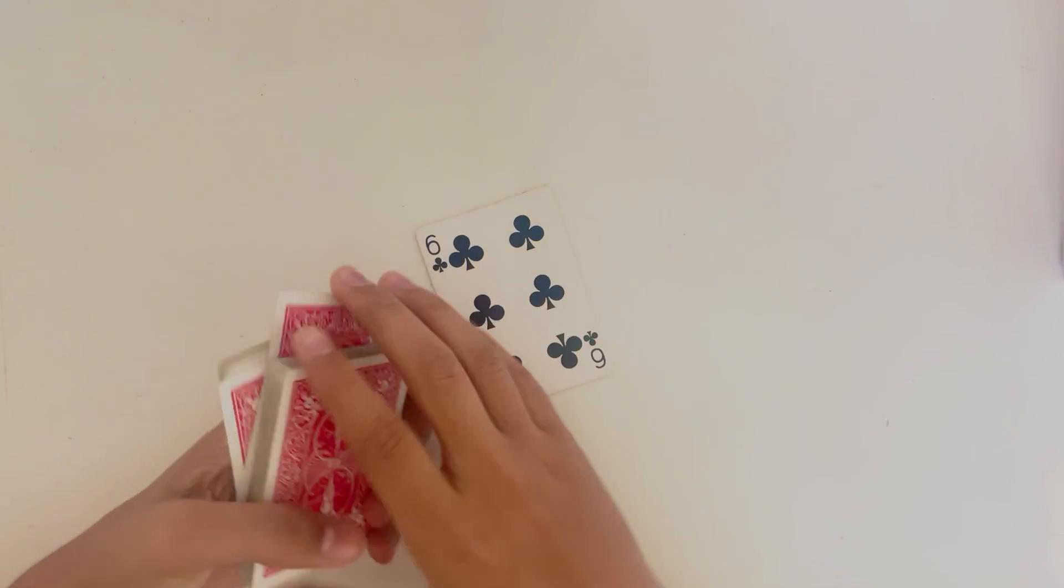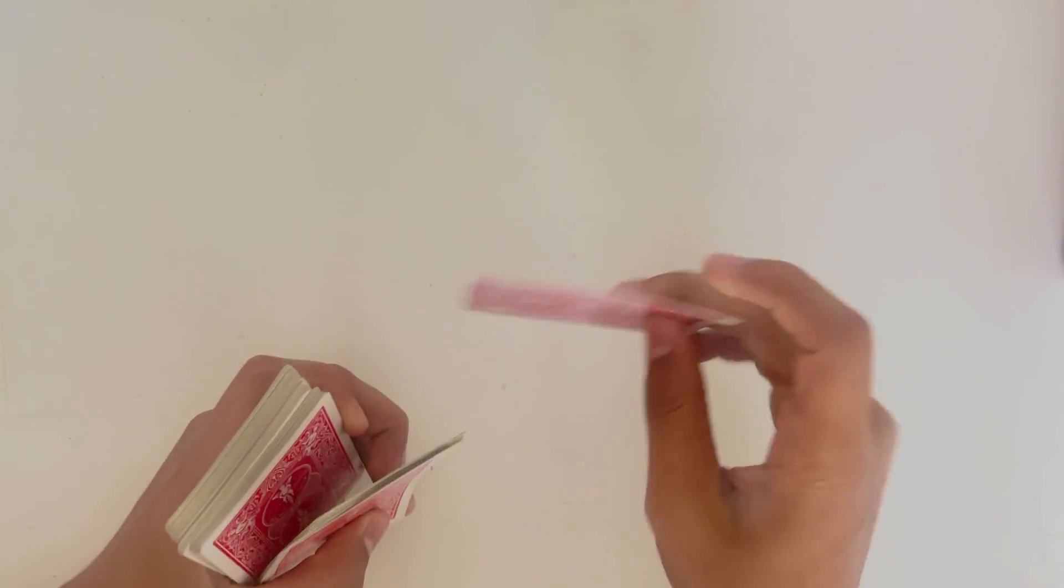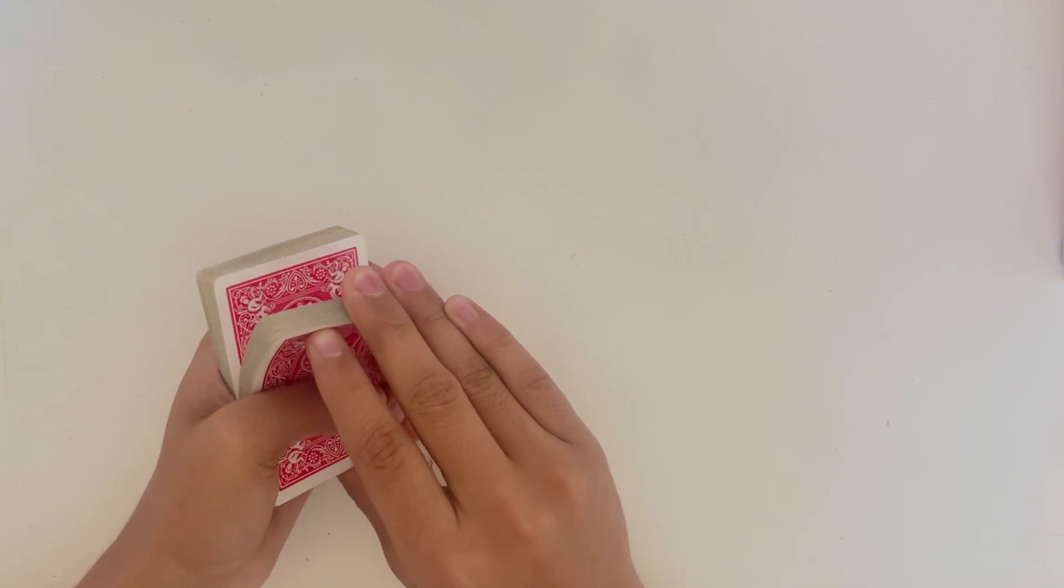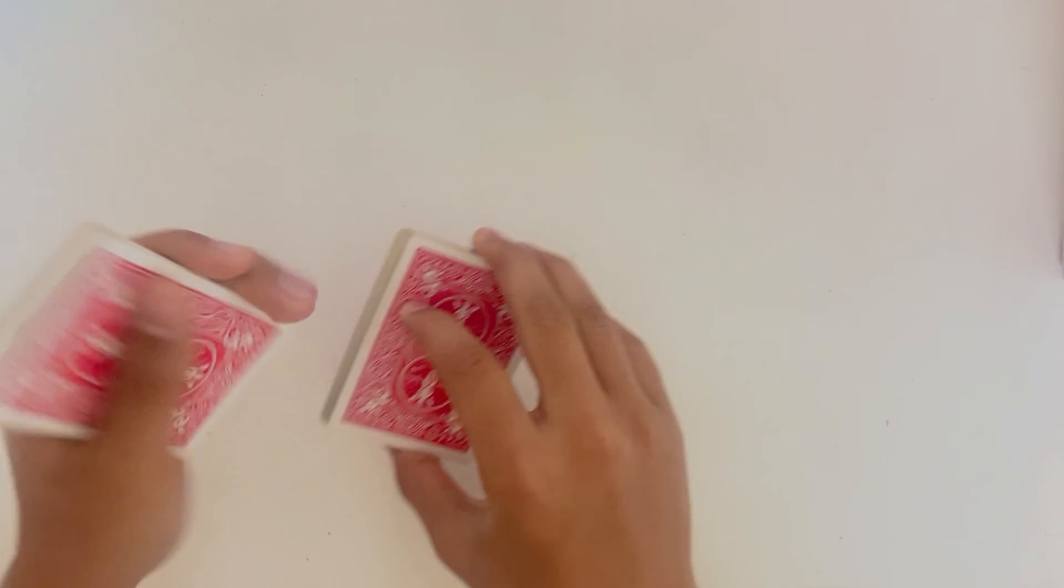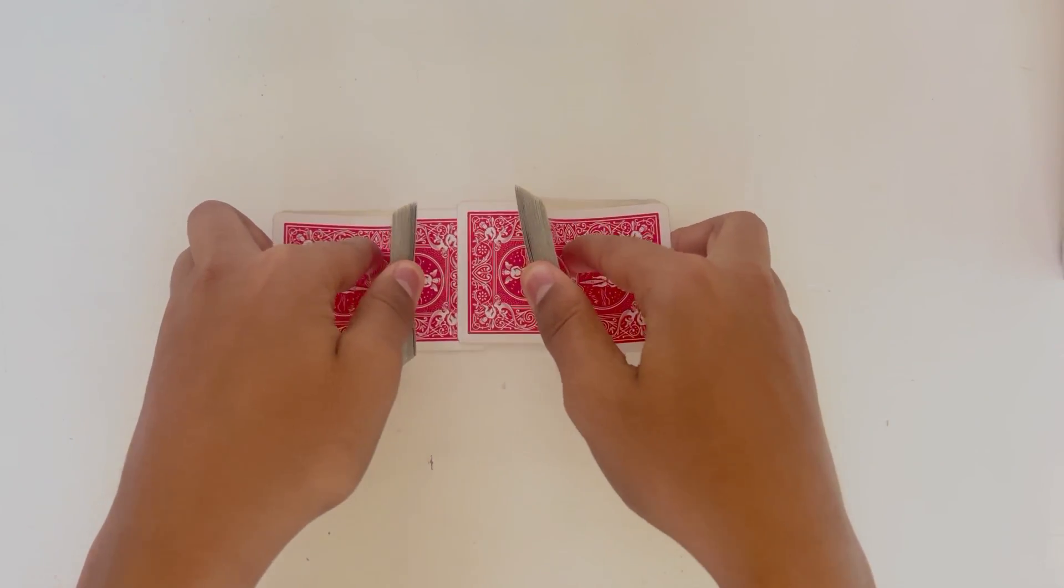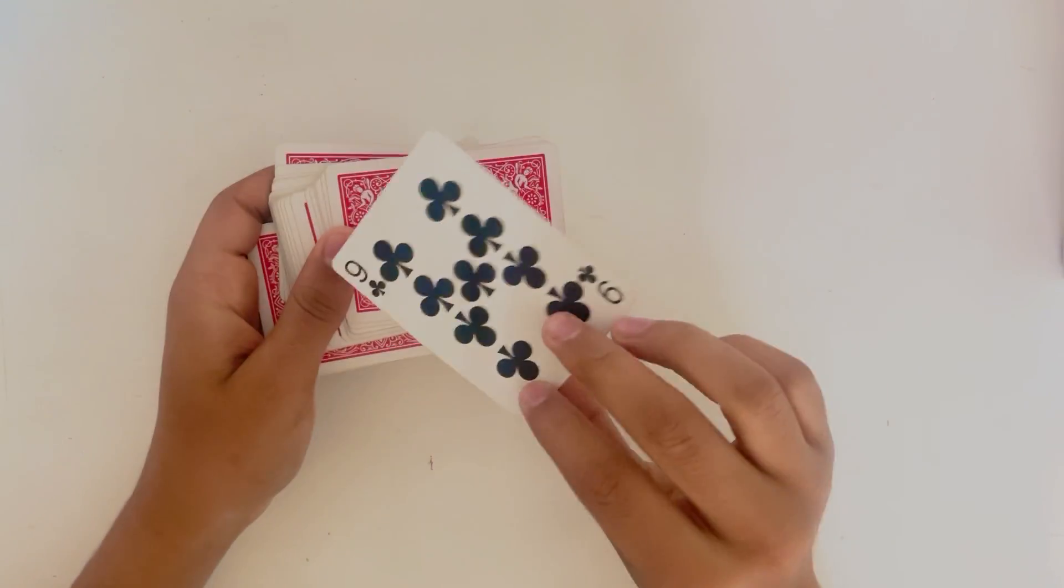Now you've lost it and you can shuffle it but when you shuffle it you want to make sure that the six needs to stay at the bottom. So you start with that and then you shuffle and then the nine obviously that's right here stays on the top.